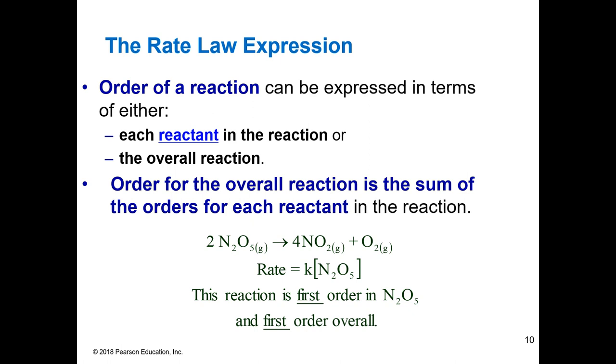And once we figure out the order of each individual, in this case we only have one, we find out what the order of it is. And then the sum of the orders is the overall order of the reaction. So if we ran an experiment and we found that this is a first order in N2O5, there's only one thing. So the overall order is also going to be first order.